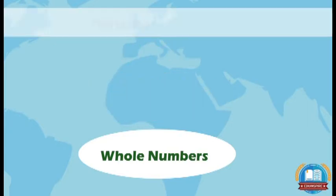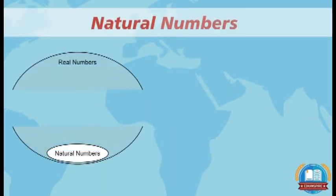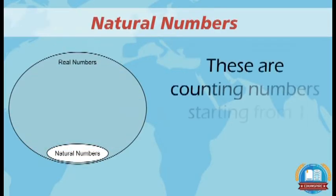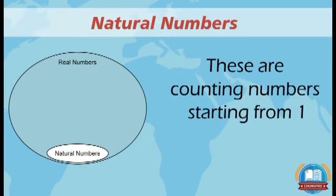Natural numbers. These are counting numbers starting from 1. Example: 1, 2, 3, etc.